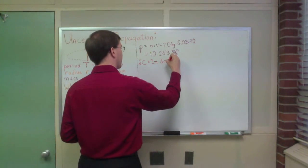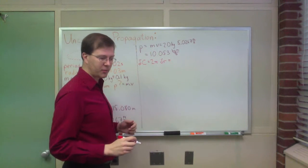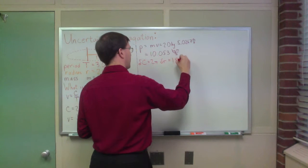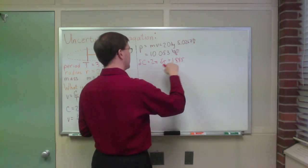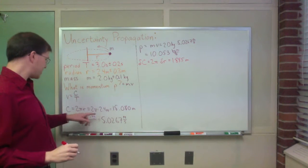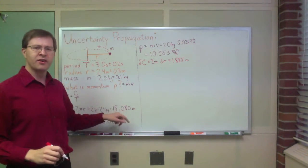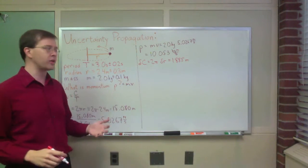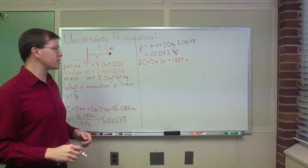And when I multiply that together, my uncertainty in the circumference that I come up with is 1.885 meters. So my circumference was 15.080 plus or minus 1.885. I'm going to keep extra sig figs around the whole time for intermediate steps because that's always a good idea. So that's my uncertainty in circumference.